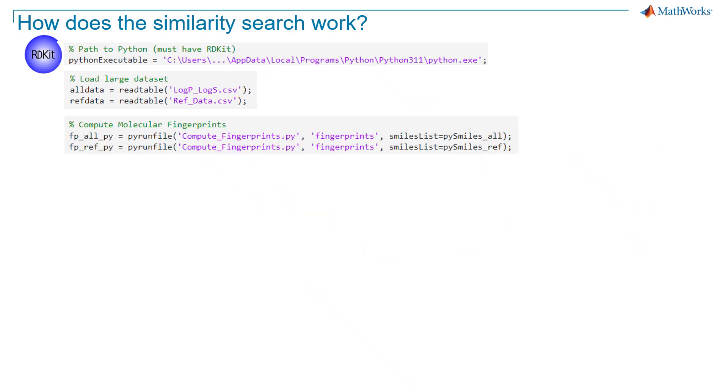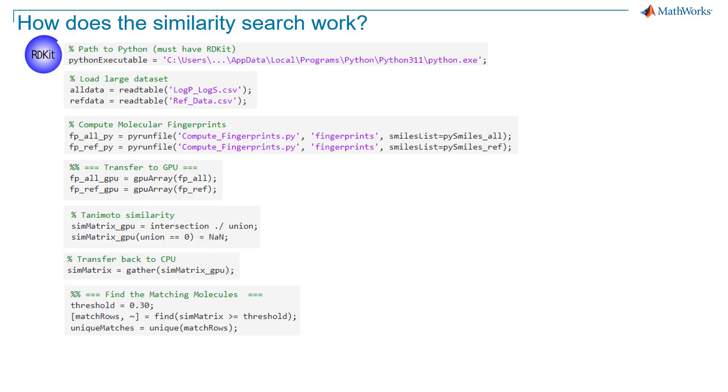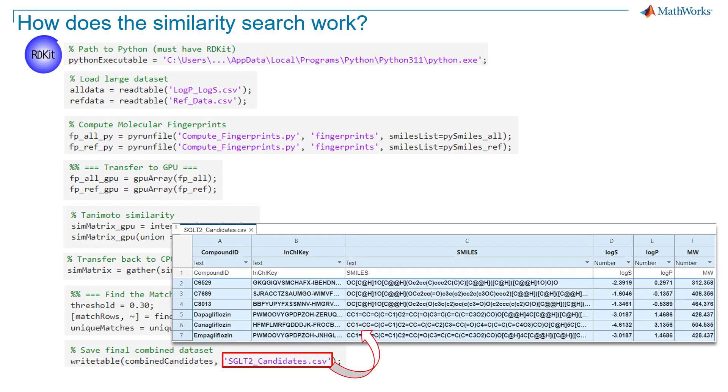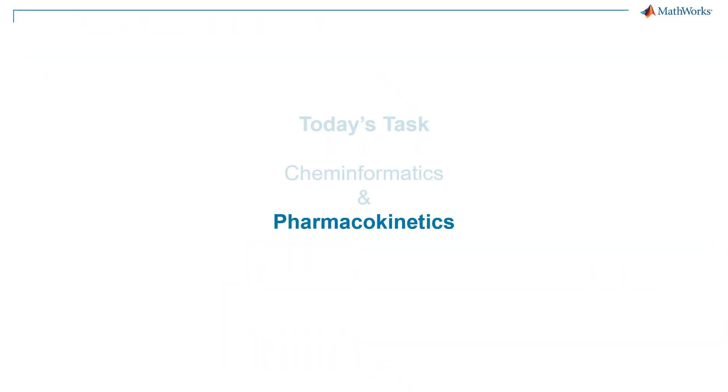As we learned before, we then extract the molecular fingerprints using RDKit. Then to accelerate the process we move them to GPU and compute Tanimoto similarities on GPU. Then we bring the results back to CPU and find the matching molecules within the desired threshold similarity score. We save the collected molecules in a new dataset and this is the dataset that we are going to use for our pharmacokinetics analysis in the next step. Note that we only found three new molecules in this dataset even though we set the similarity score very low at 30 percent. Now let's look at the pharmacokinetics of these molecules.